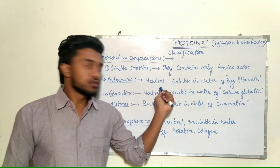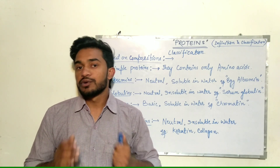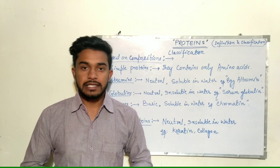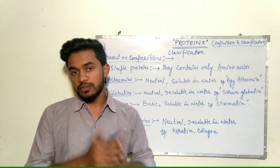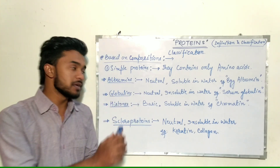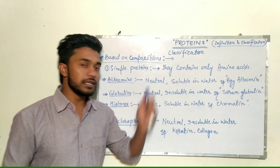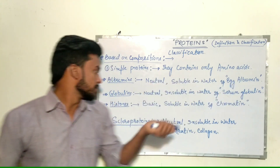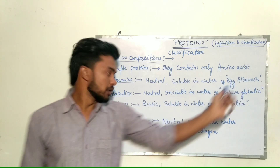There are 20 amino acids required to form proteins, and these may be neutral, acidic, or basic in nature, giving proteins different properties. Albumins are neutral in nature, soluble in water — example: egg albumin. Globulins are also neutral in nature, insoluble in water — example: serum globulin.